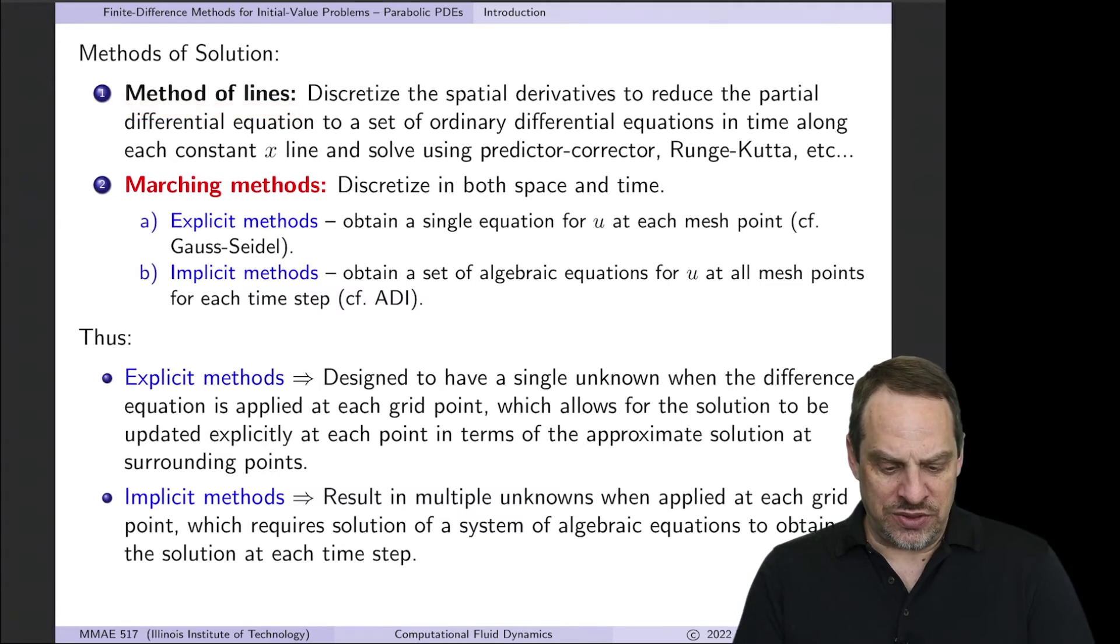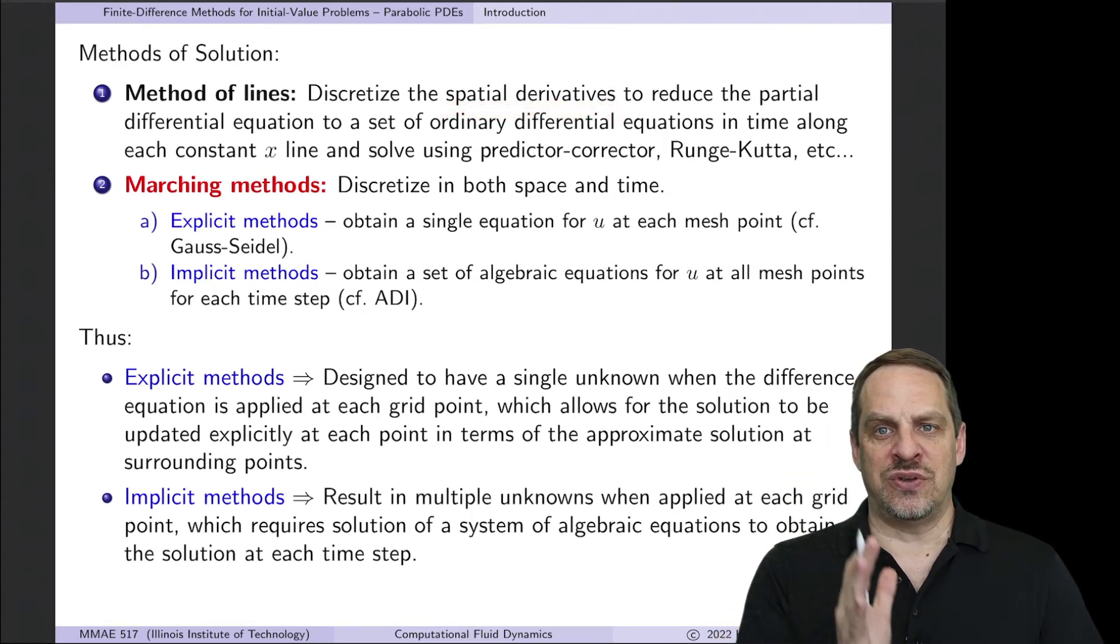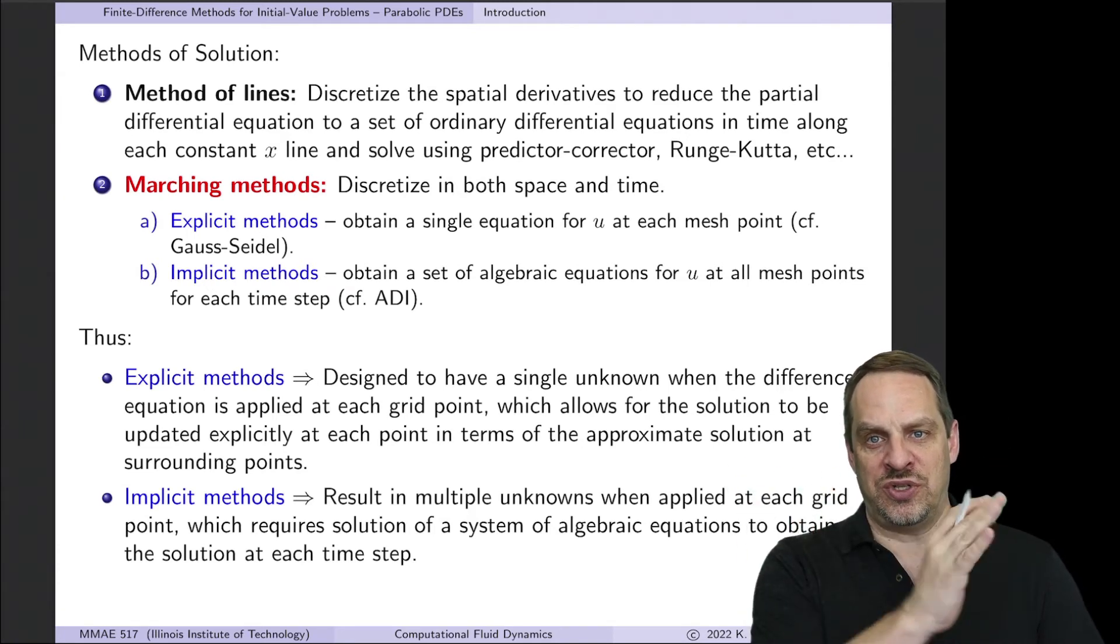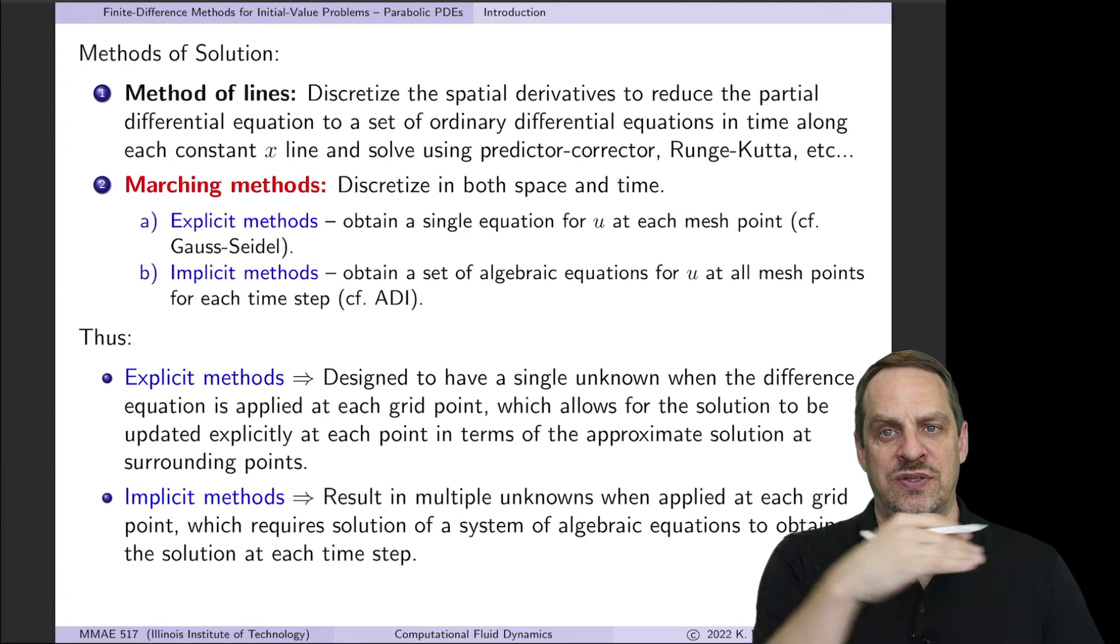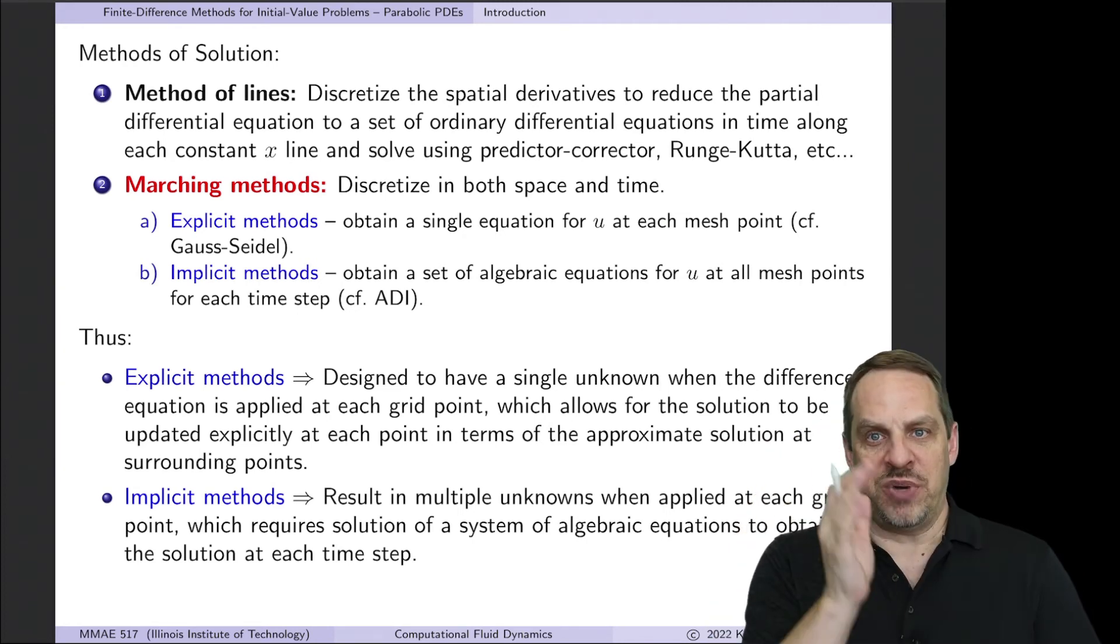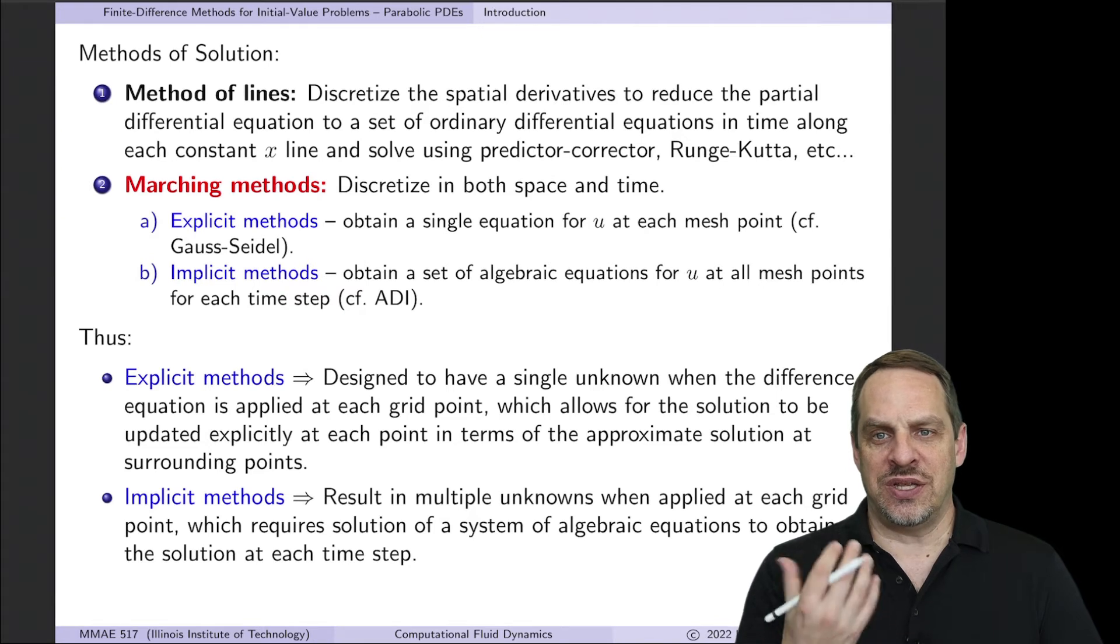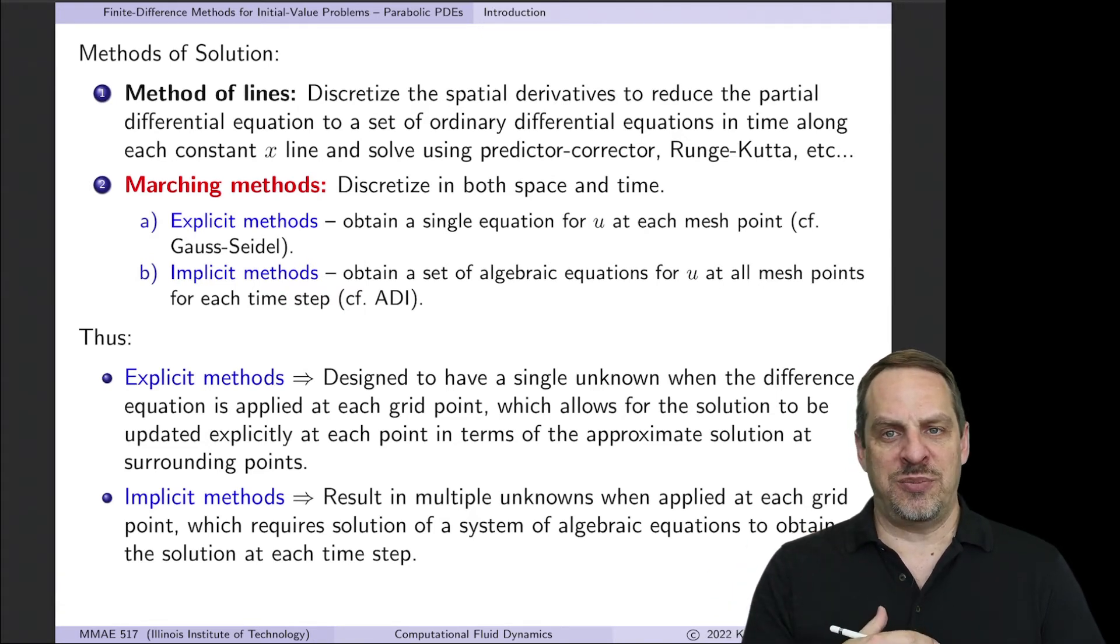So basically, the idea is you discretize the spatial derivatives only, not the temporal derivatives, just the spatial derivatives. And that will produce a series of ordinary differential equations in time, all of which then can be solved to get the solution for x and t by solving these ODEs in time. You could solve them using the standard predictor corrector, Runge-Kutta methods, and so on. This technique, again, is kind of historical. This is not used widely today because we have, obviously, much more computing power, and we're not limited to just solving ODEs.